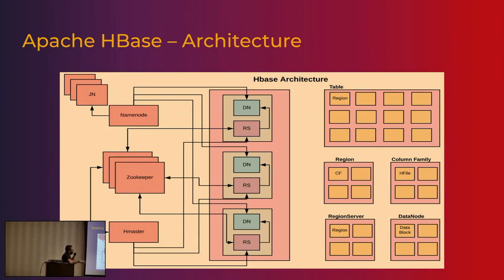In terms of data, a typical HBase setup would have a few regions — a table is divided into regions. Each region has one or more column families, and each column family has HFiles for persistence. A RegionServer hosts regions, and a DataNode hosts the actual data. A region is an in-memory construct on the RegionServer, and HFiles are the physical data constructs.